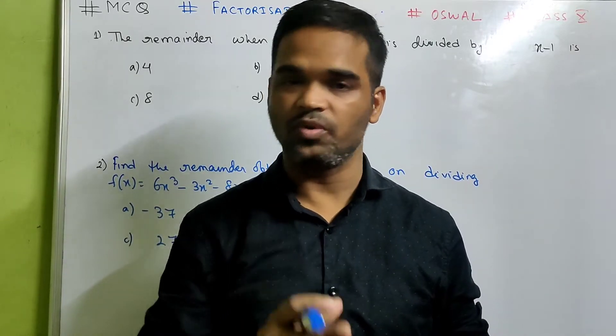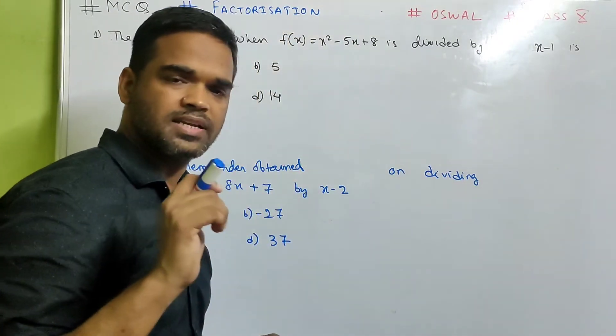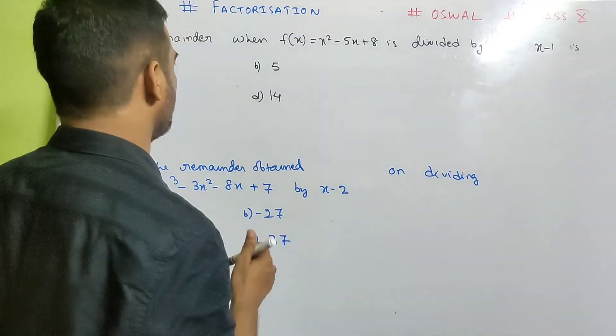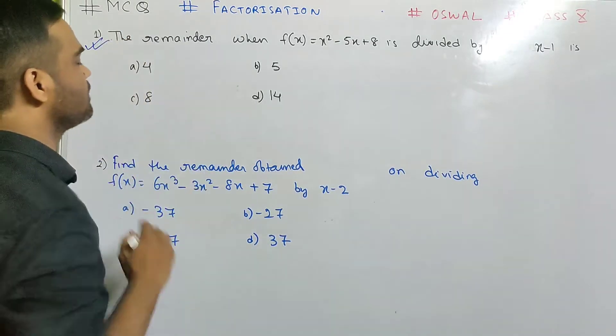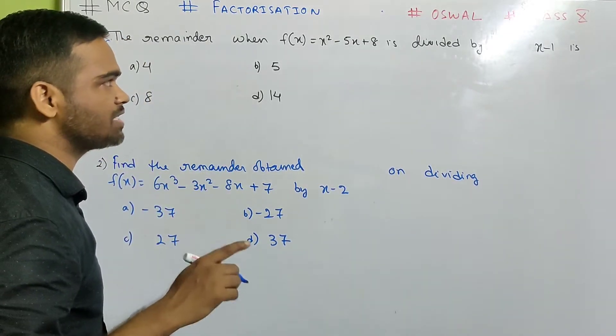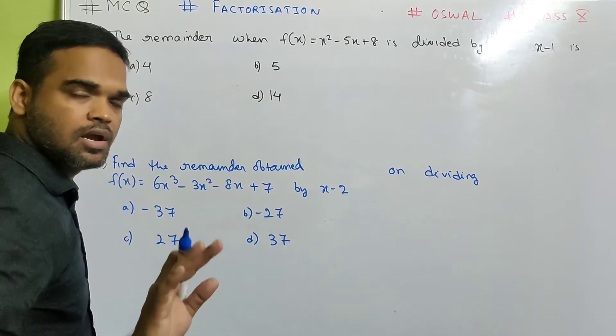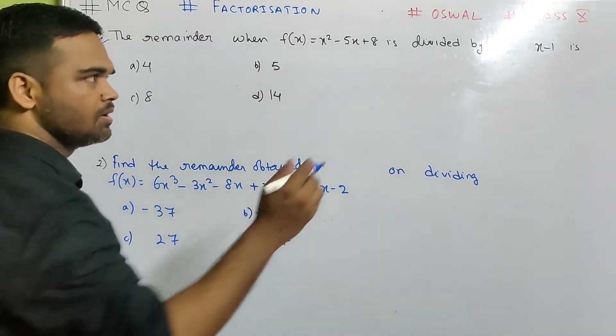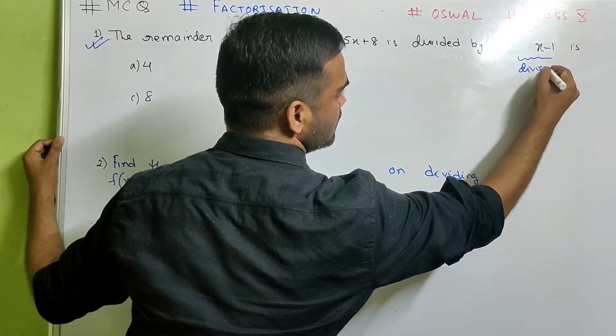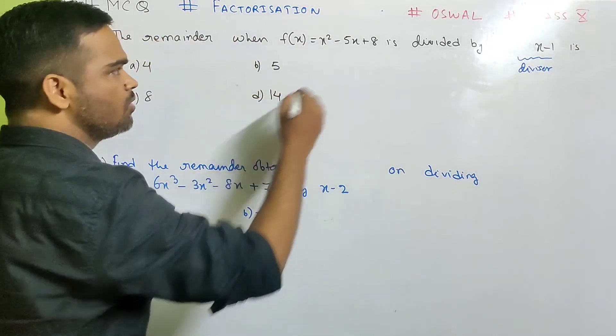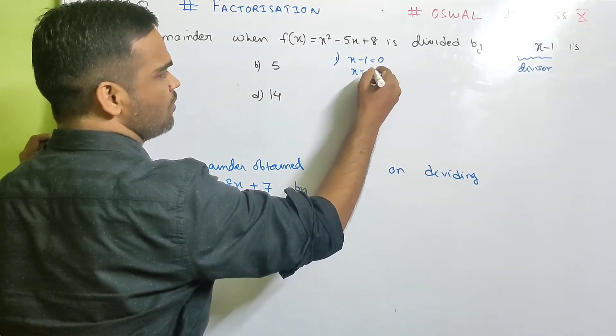Hi kids, in this video we'll solve MCQs from factorization from class 10 from the book Oswald. The remainder when f(x) equals x squared minus 5x plus 8 is divided by x minus 1 is. But we know how to find the remainder. See, this is your divisor, isn't it? So in the first step what we'll do?